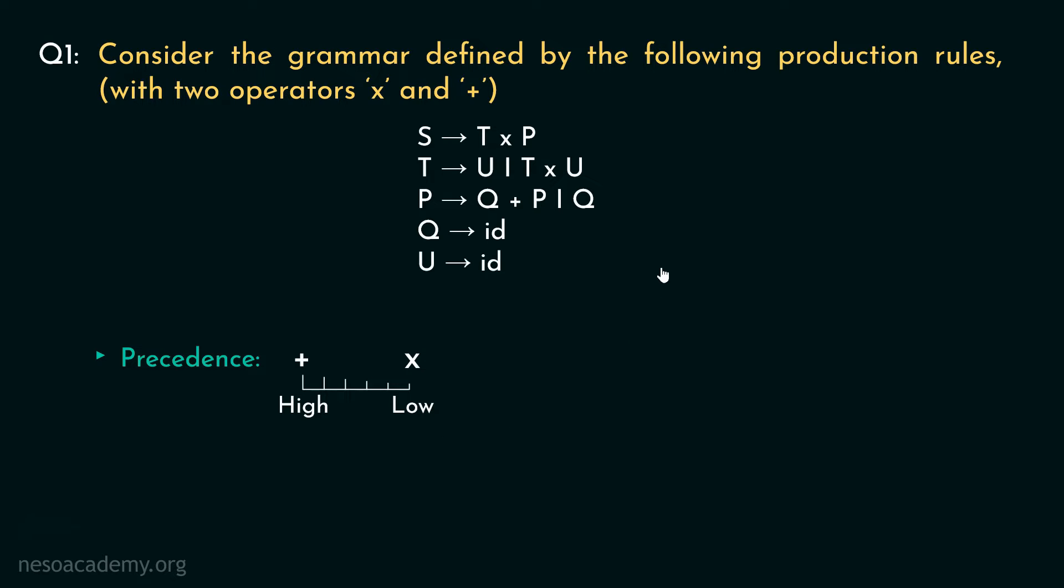Now, it's time for us to figure out the associativity of the operators. Consider this production rule. T can be rewritten as T into U. Here the non-terminal T is reappearing as the leftmost non-terminal in the right hand side, making it a left-recursive production rule. So, basically, the multiplication operator is left associative.